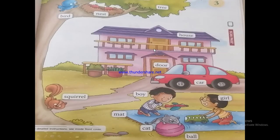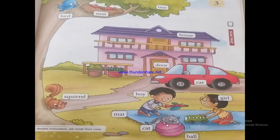We will move on. We have a small picture and it has a lot of names. Let's see: bird, nest, tree, house, door, car, boy, squirrel, mate, kid, ball, girl. This picture shows a place, persons, things, and animals. We have a lot of naming words in it.